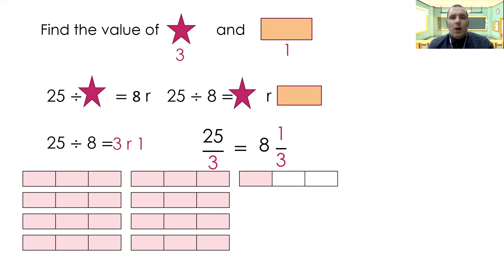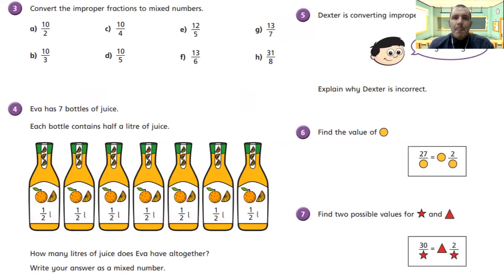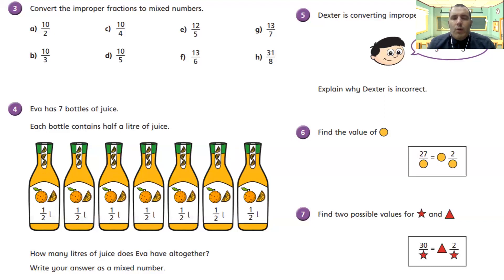So our star is worth three and our yellow block was worth one. Have a go with these — see if you can convert these through. Just remember: use your division skills, divide the numerator by the denominator for question three, and work your way through questions four, five, six, and seven. Pause the video now.